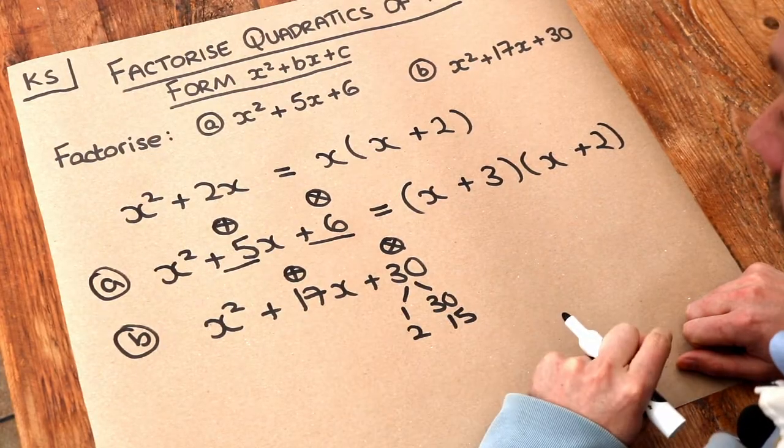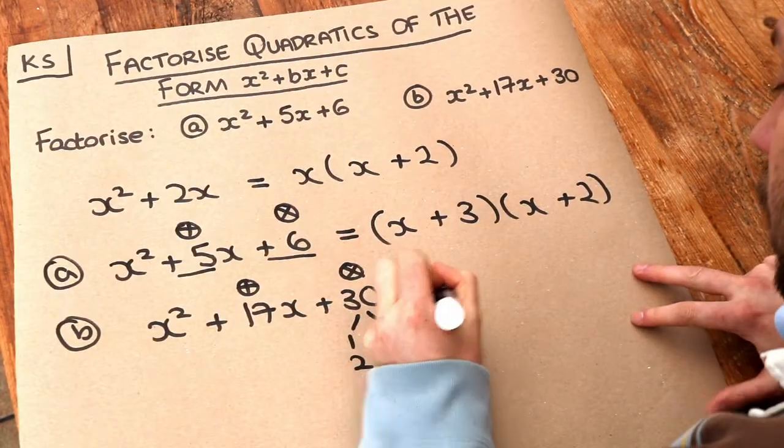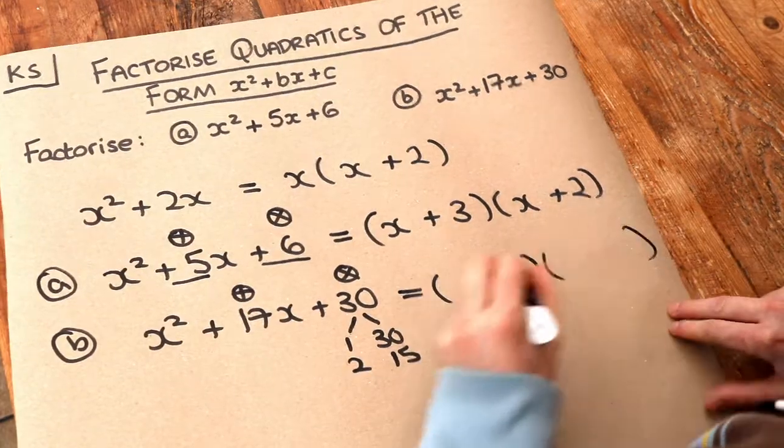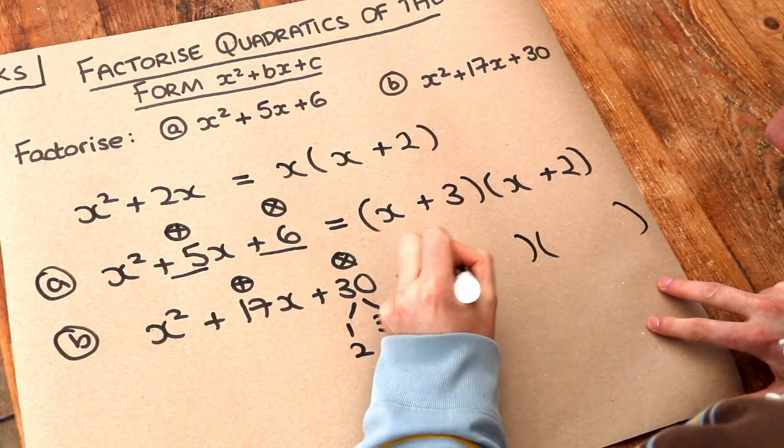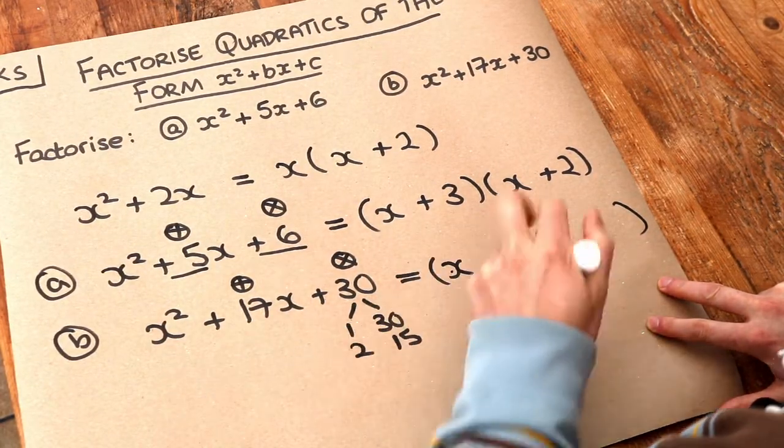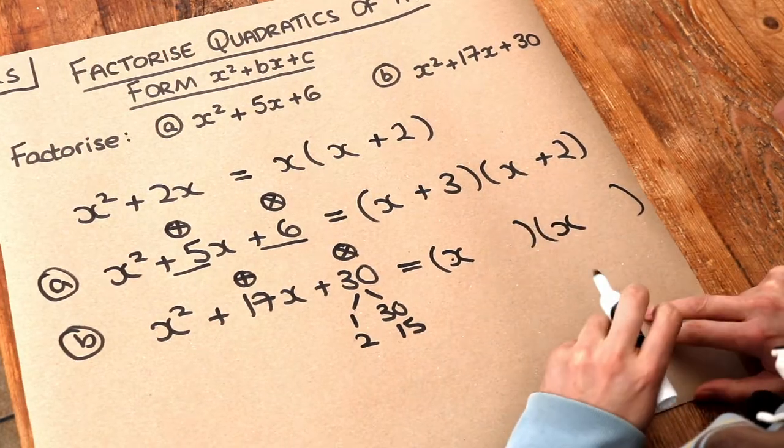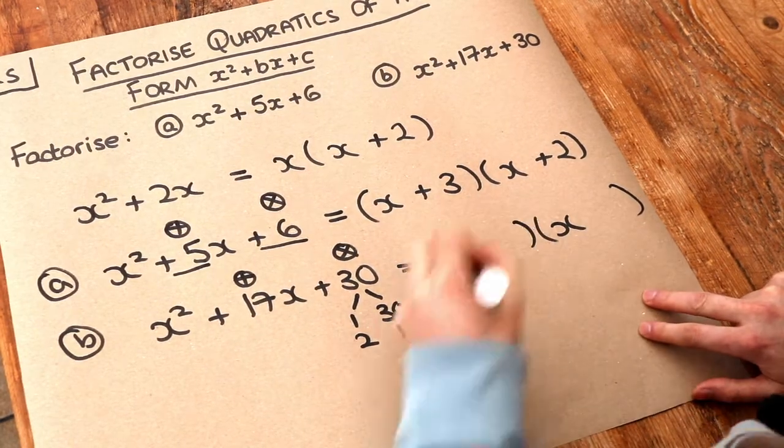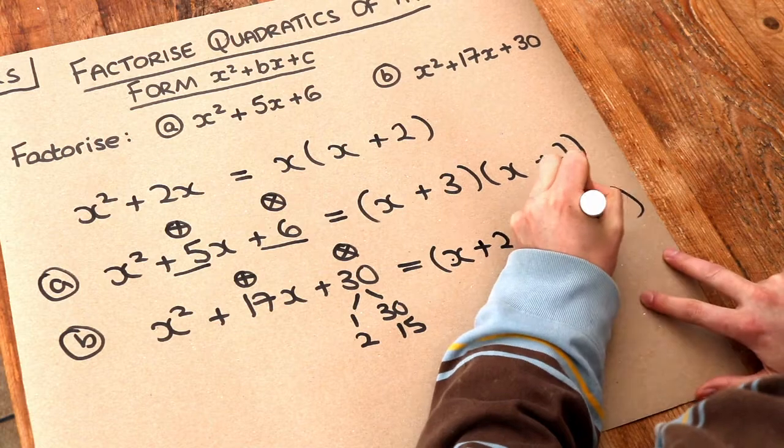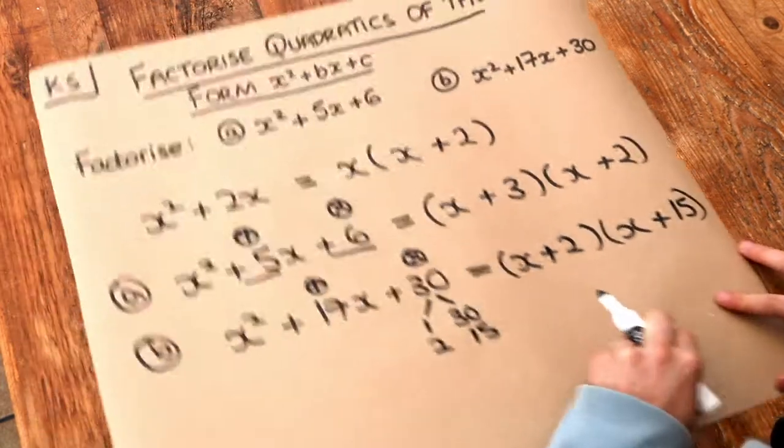So again, we have two brackets, put x at the start of each one because we've got x here and then we use those two numbers. So we've got the plus 2 and the plus 15. Again, they could go the other way around.